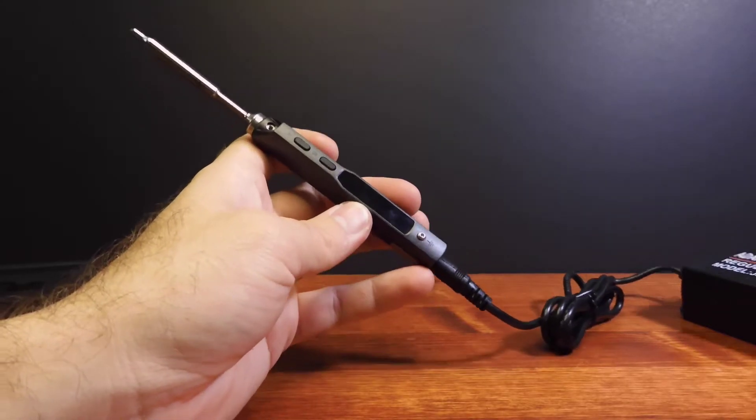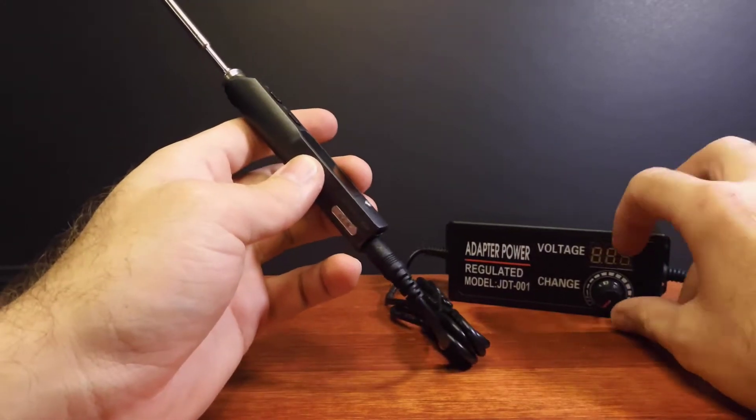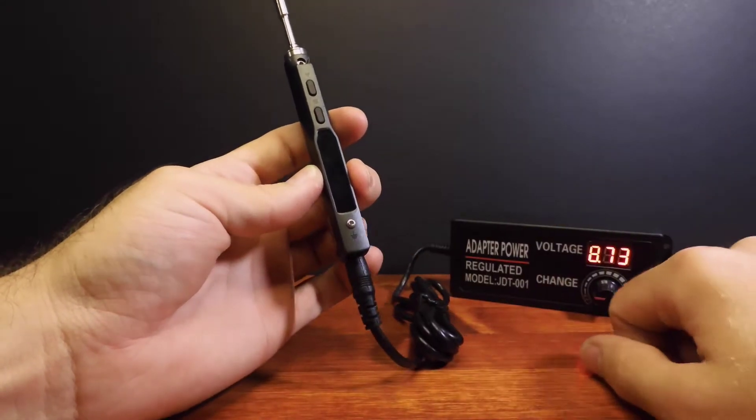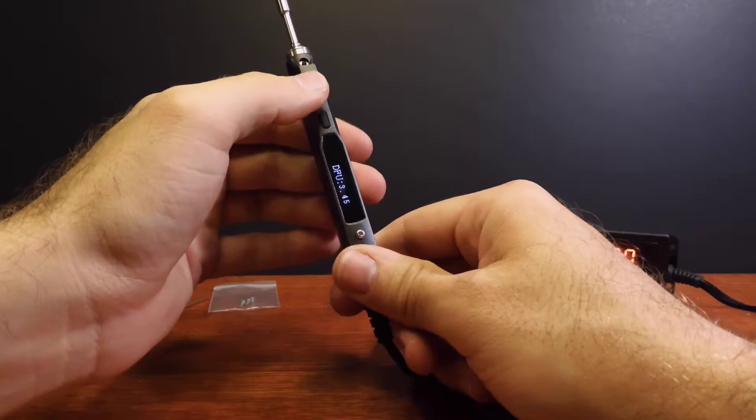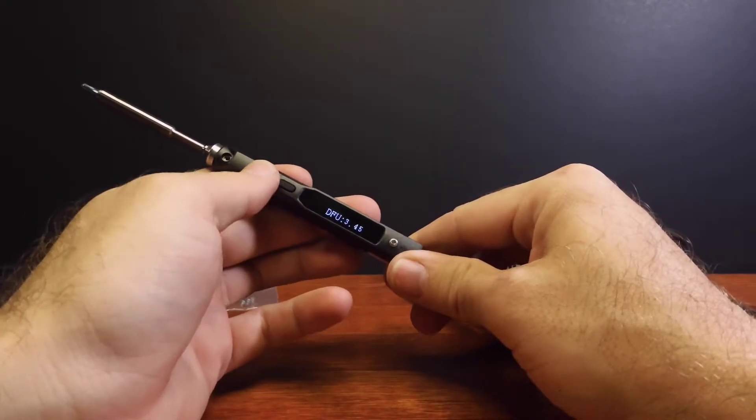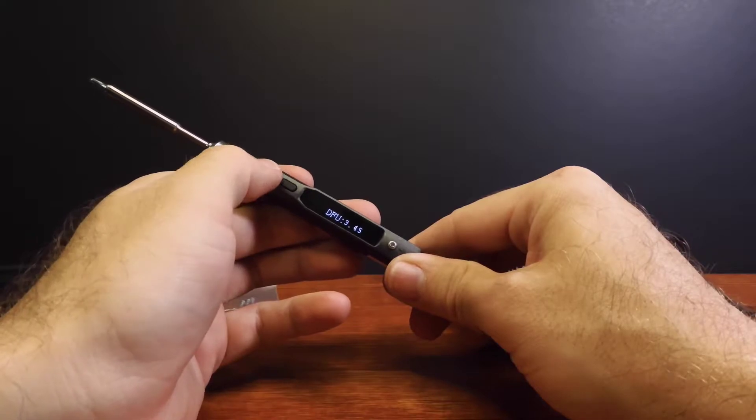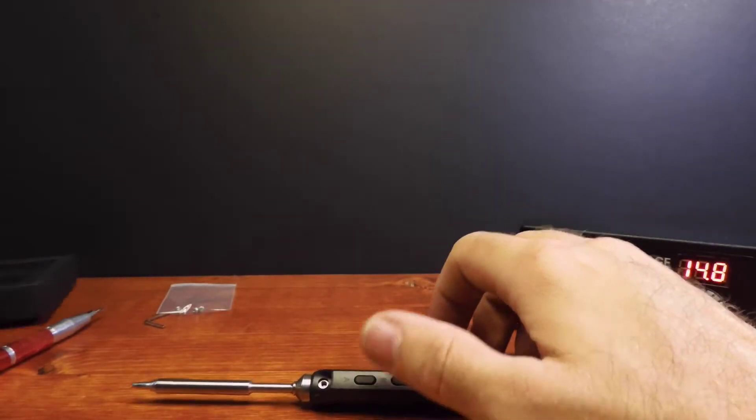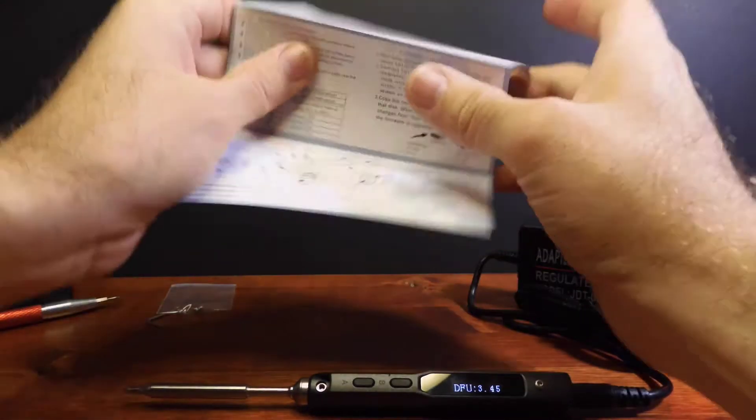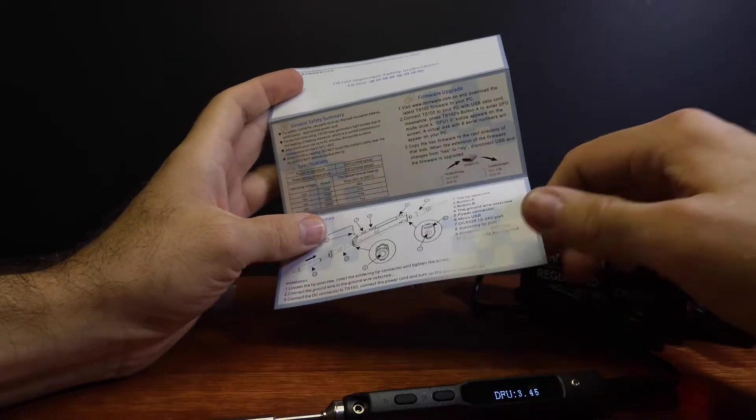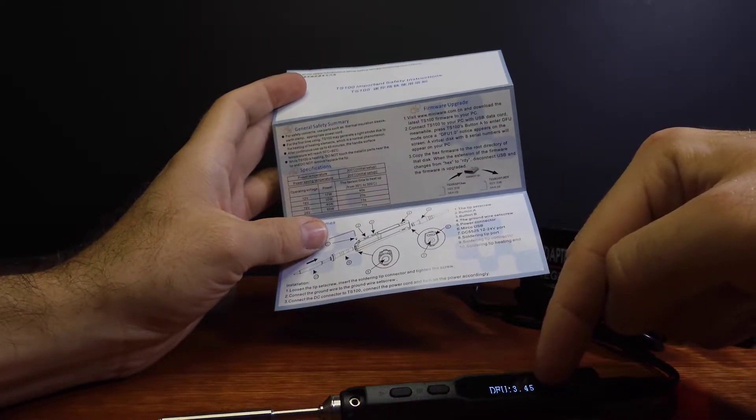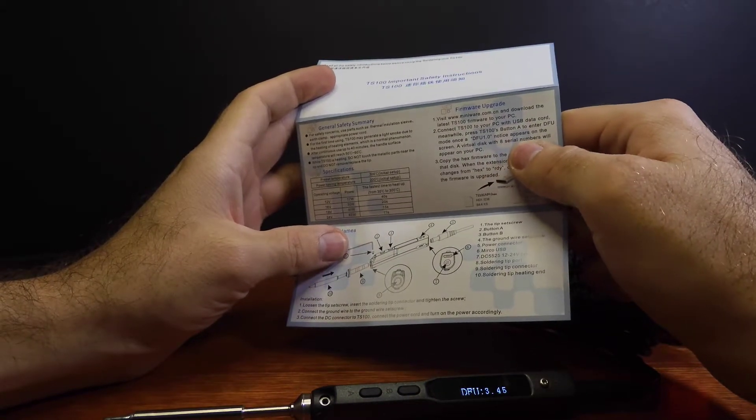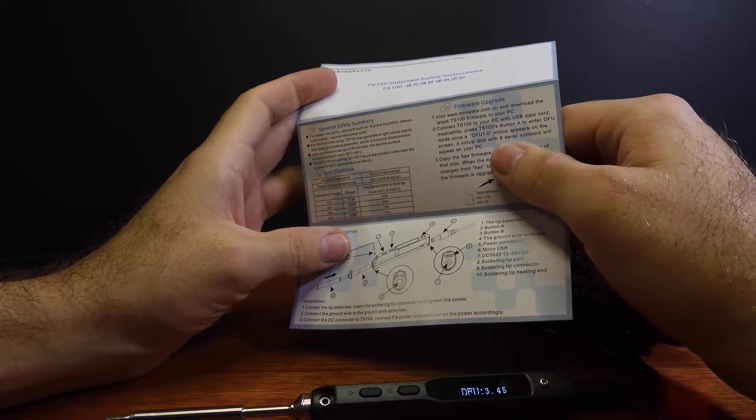When I first plugged it in, it was stuck in DFU 3.45. What the hell is DFU? What does DFU stand for? I wasn't really sure what that meant, so I checked the booklet, and apparently it wanted me to download the latest firmware. So instead of doing that, I just put the soldering iron away for now and came back to it a couple of weeks later.